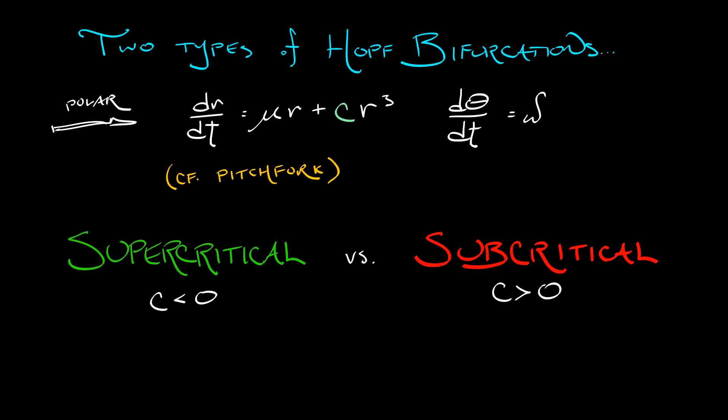In the supercritical case, what we have is what we just saw previously in that visualized example, where a stable equilibrium gives birth to a stable limit cycle, that periodic orbit that you are attracted to. And just as with a supercritical pitchfork bifurcation, a supercritical Hopf is a safe bifurcation.